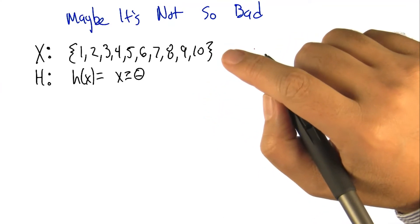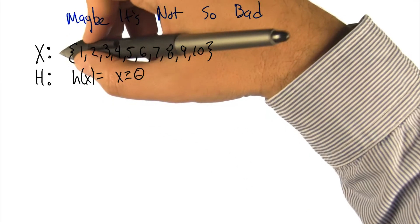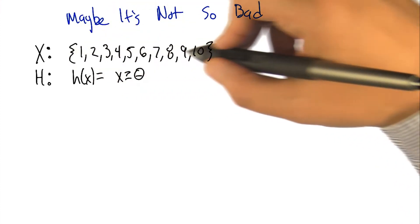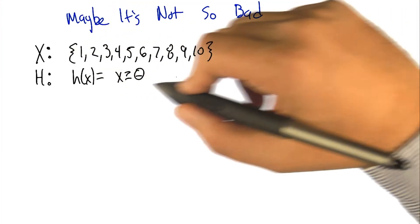So here's an example to explain why maybe the situation's not so bad after all. Let's look at a particular example. We've got our input space consisting of, say, the first ten integers.